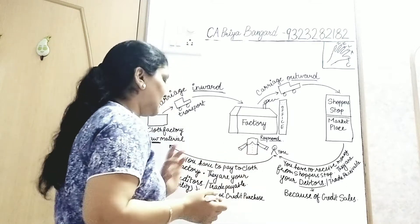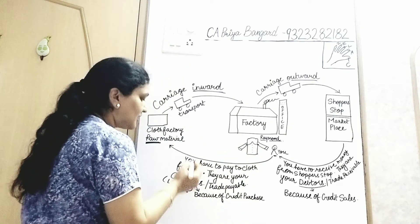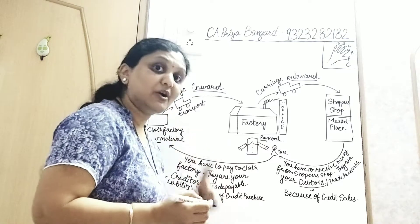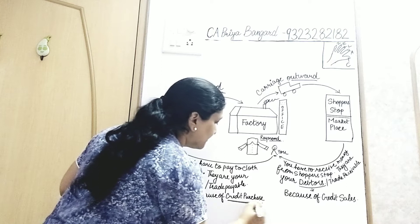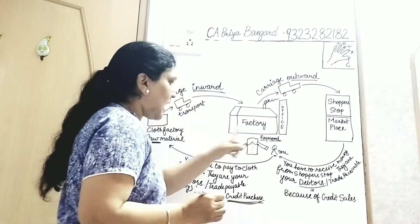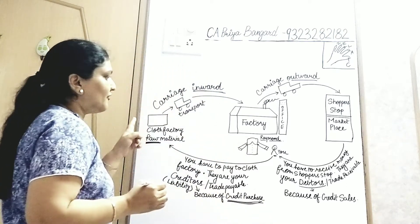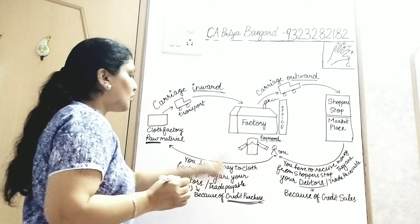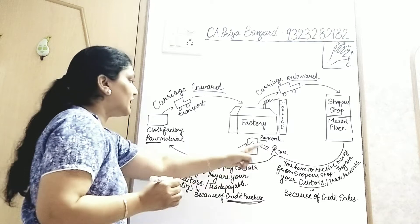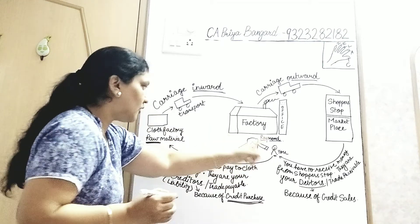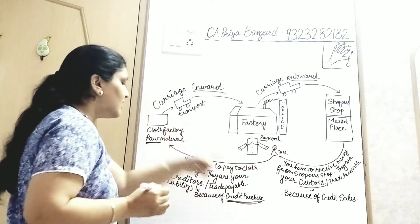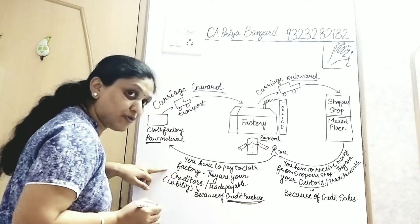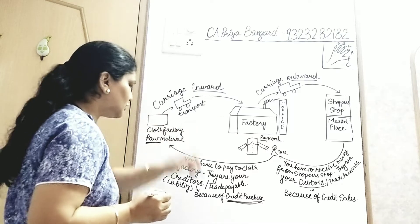Creditors are payable, so creditors is your liability and they arise because of credit purchase. You took from the cloth factory on credit, that is credit purchase, so creditors arose. You have to pay money to this cloth factory because of your credit purchase, and they are known as creditors to you, and they are your liability.